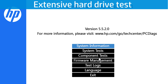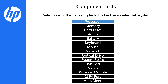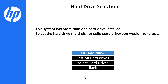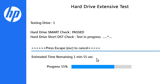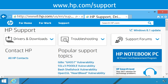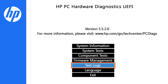Click Main Menu, then click Component Tests. Next, click Hard Drive, then click Extensive Test. Click Run once. If the computer has more than one hard drive, click Test All Hard Drives. The testing progress is shown on the screen. If the hard drive fails one of these tests, write down the information and contact HP Support. The test results are also available under the test logs on the UEFI Main Menu.